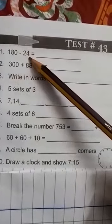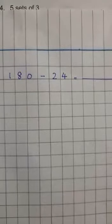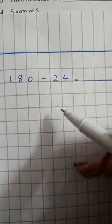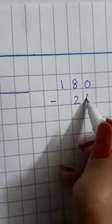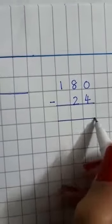Question one: 180 minus 24. So how will we do this sum? First we will write the place value from the ones side. We arrange the numbers: one hundred and eighty minus twenty four. Like this.